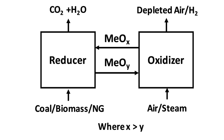Chemical looping combustion is a technological process typically employing a dual fluidized bed system. CLC operated with an interconnected moving bed with a fluidized bed system has also been employed. In CLC, a metal oxide is employed as a bed material providing the oxygen for combustion in the fuel reactor. The reduced metal is then transferred to the second bed and re-oxidized before being reintroduced back to the fuel reactor, completing the loop. FIG 1 shows a simplified diagram of the CLC process. FIG 2 shows an example of a dual fluidized bed circulating reactor system and a moving bed fluidized bed circulating reactor system.